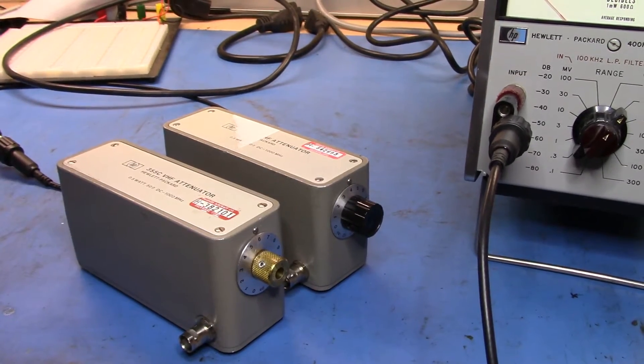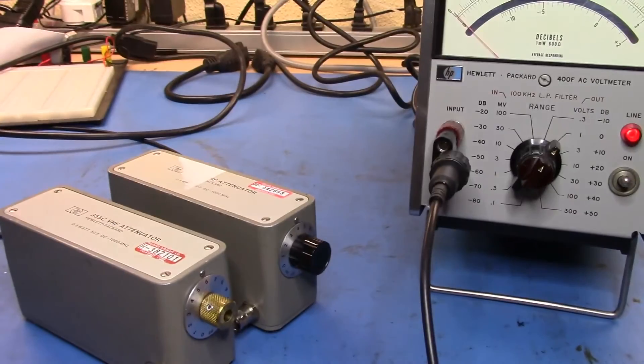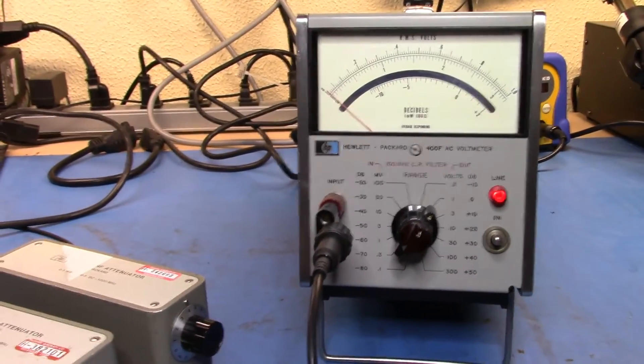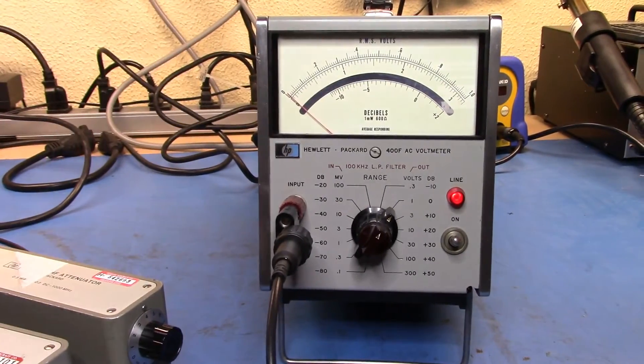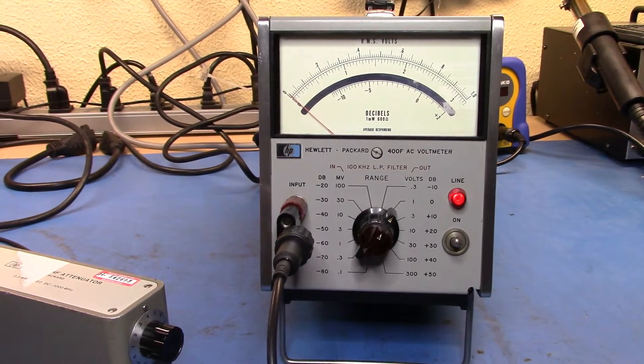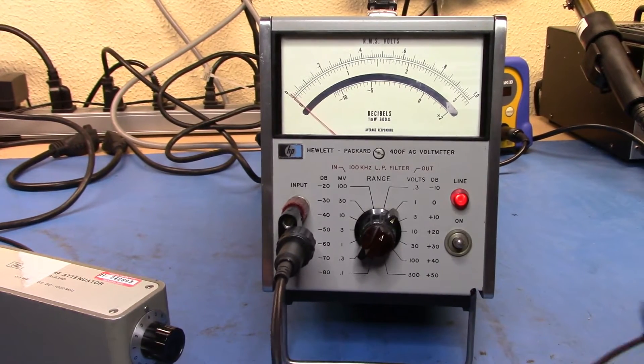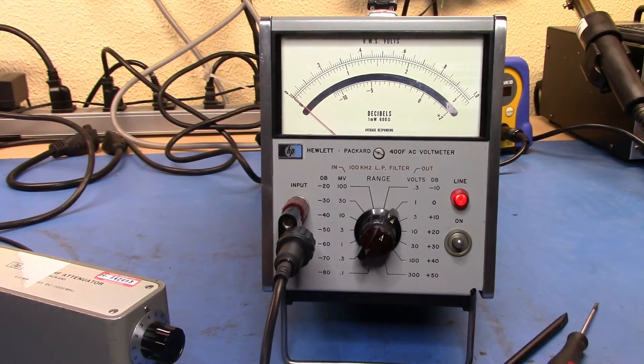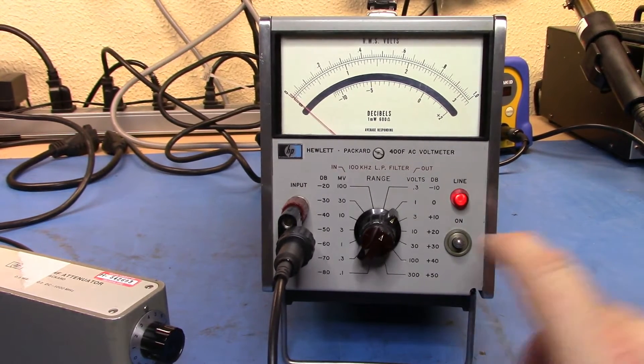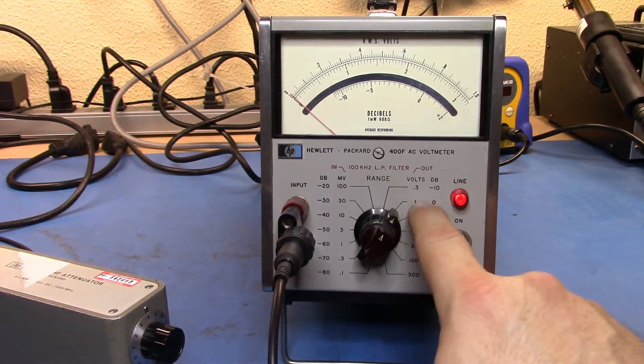But before we do that, let's take a look at how these things work. And we'll do this utilizing our trusty little HP 400F AC voltmeter. So you can see that I have it set for 0 volts, or the 1 volt range.